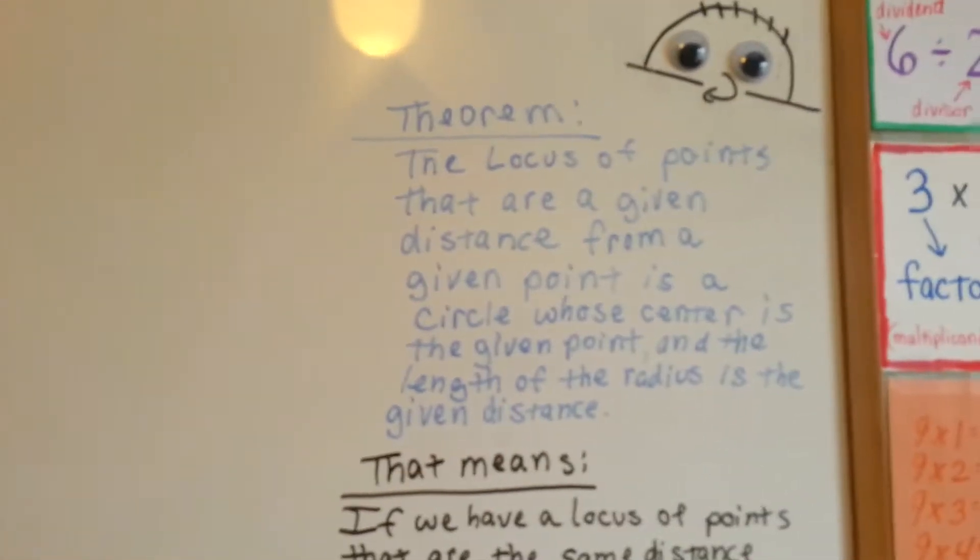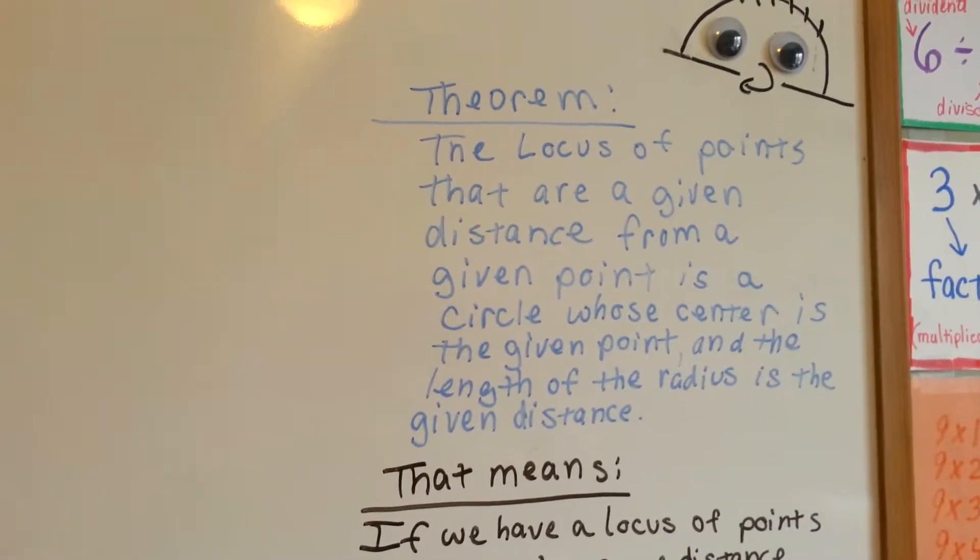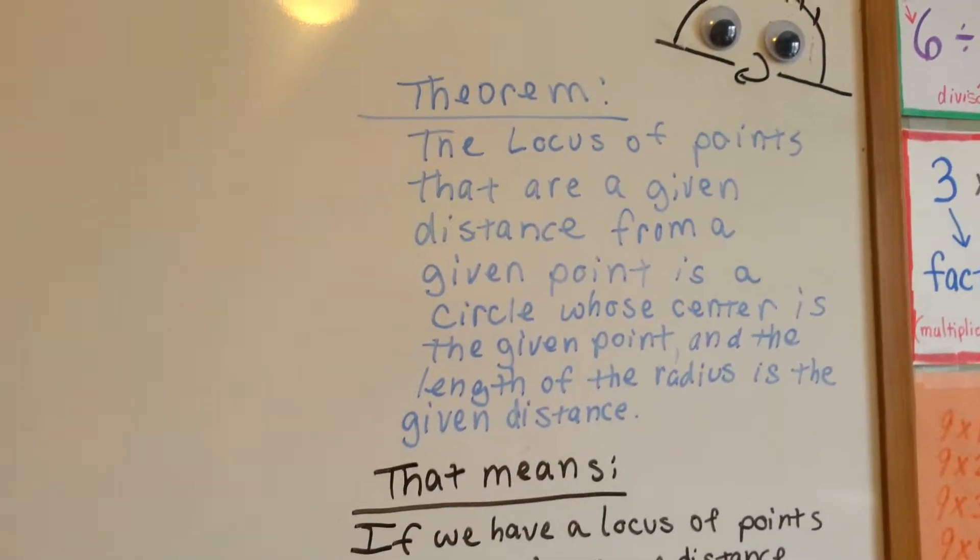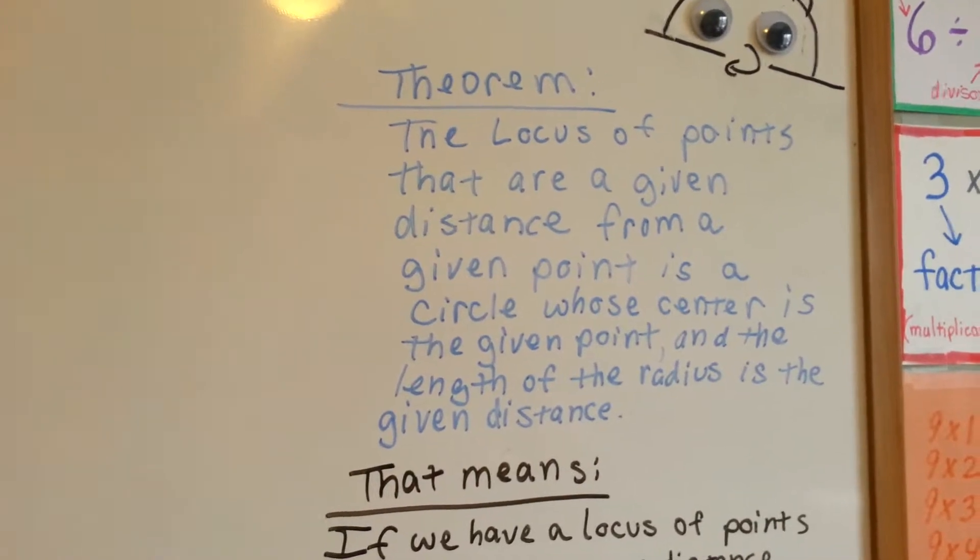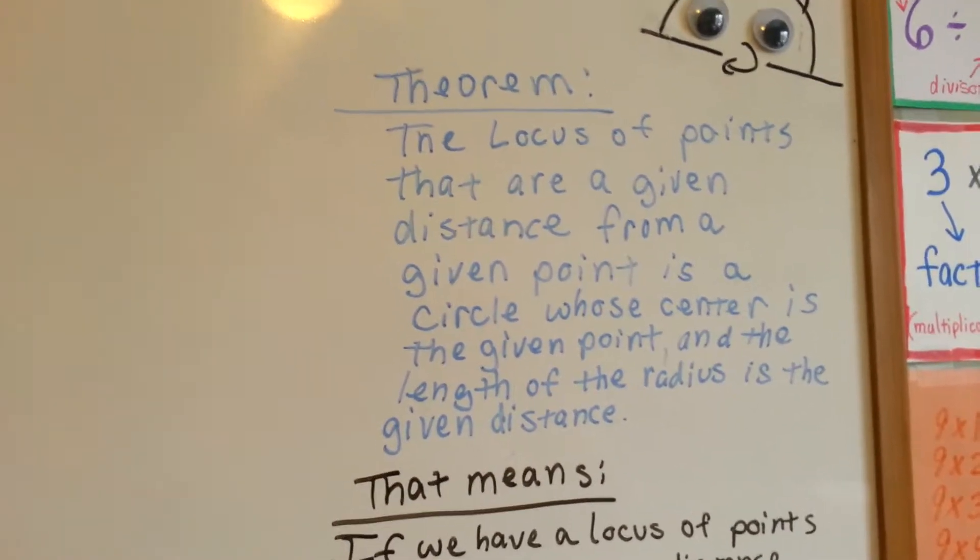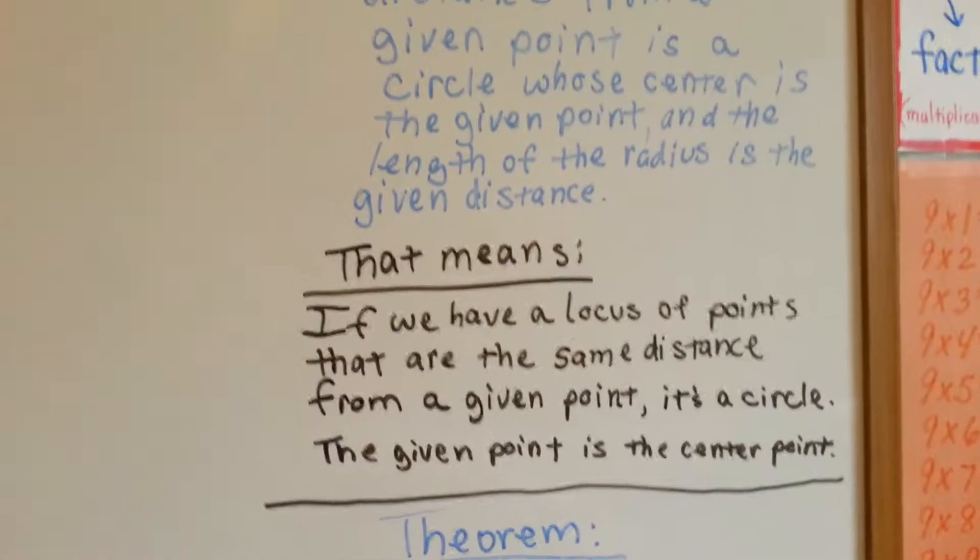First one. The locus of points that are a given distance from a given point is a circle whose center is the given point, and the length of the radius is the given distance. Oh, okay. English, please.